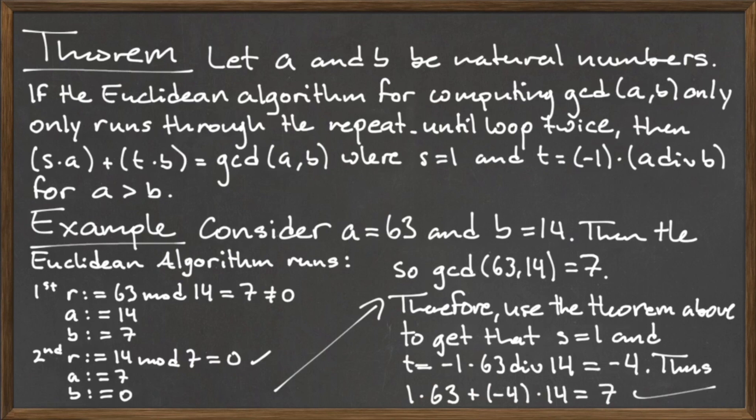Since the loop inside of the Euclidean algorithm only needed to run twice before it finished, we can use the theorem above to find the cofactors. The theorem guarantees us that s is equal to 1, so we only need to compute negative a div b to find the answer for t.